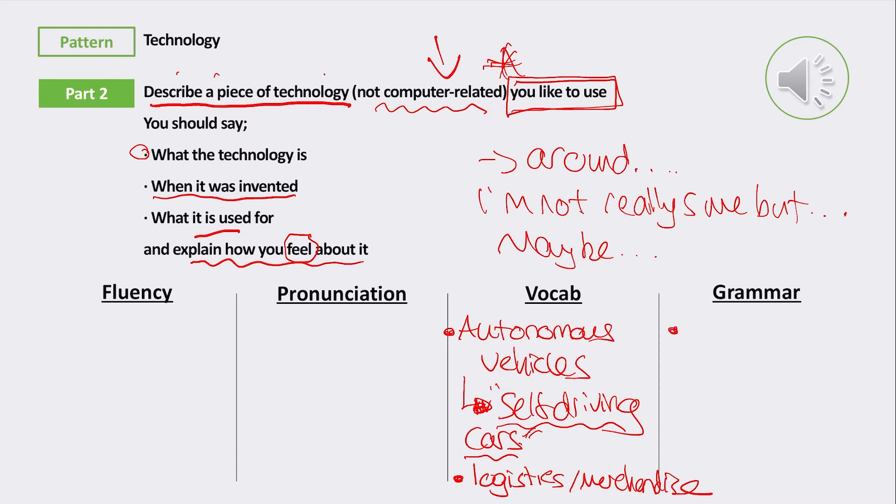They used other really good vocabulary in their answer. I like their use of talking about logistics and merchandise in terms of talking about how self-driving cars are used. I like to note that he used a really good phrase when he talked about when it was invented. This candidate said, 'I'm not sure about when it was invented,' or 'I'm not sure about the exact date.' That was a really good, nice hedging phrase to use—it's very natural English.